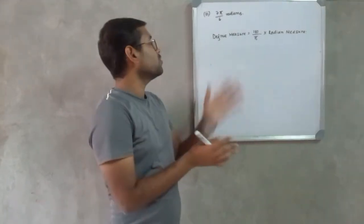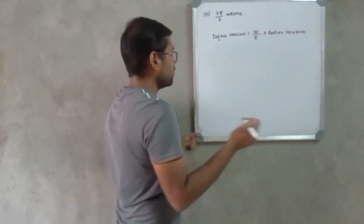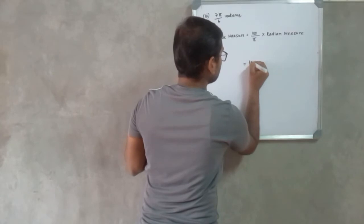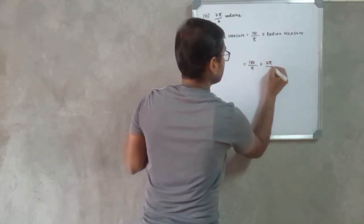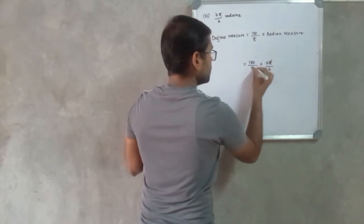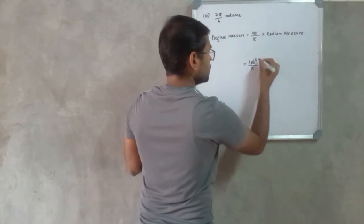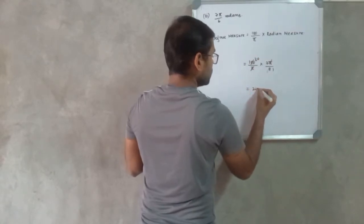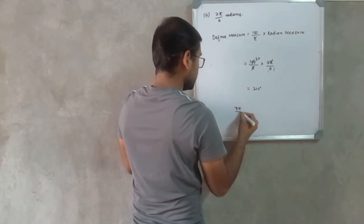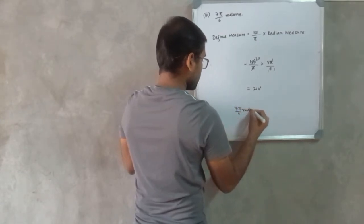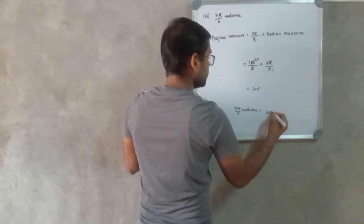Finally, we have 7π/6 radians and we need to convert it into degree measure. Using the same formula, 180 × (7π/6) ÷ π — cancelling π — gives 180 × 7/6 = 210 degrees. So, 7π/6 radians = 210 degrees.